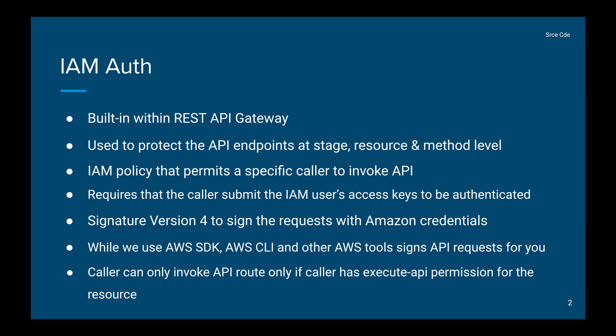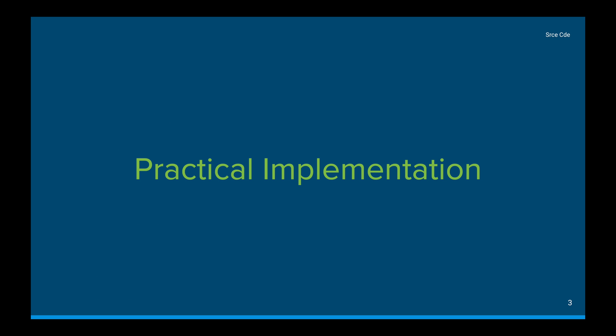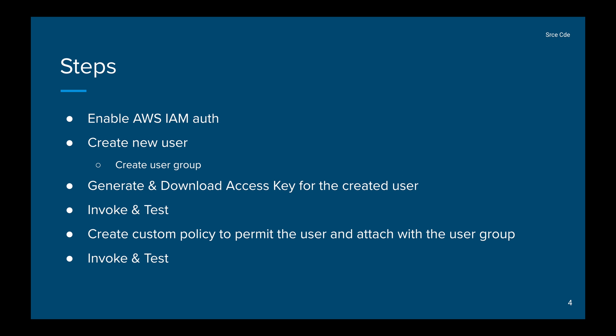To invoke the API endpoint successfully, the caller should have execute-API permission for the resource they are trying to invoke. We are going to look at execute-API in a bit. Now we will look at the practical implementation.